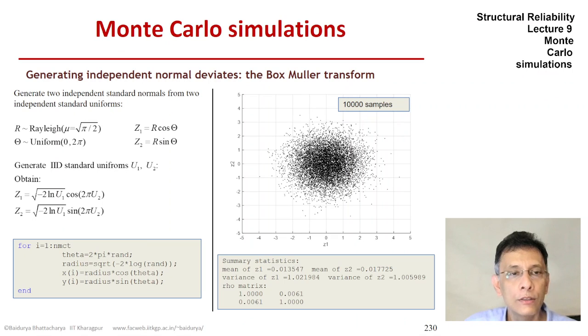And if we want to find the statistics of these 10,000 samples, clearly we are getting something close to the theoretical values. The means of Z1 and Z2 are close to zero. The variances are each close to one and the correlation coefficient is pretty small and close to the ideal value of zero that we should expect.